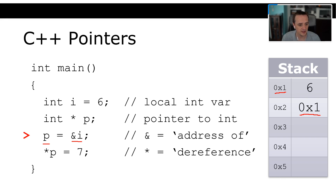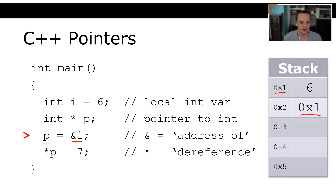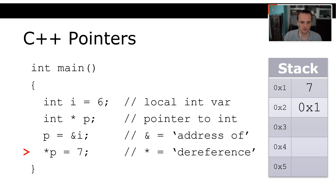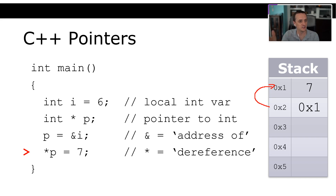To make the pointer point to variable `i`, we use the ampersand symbol — in this context it's the 'address of' operator: `p = &i`. So the value of `p` on the stack is now `0x1`, which is the memory address of `i`. Now if we want to set the value at the memory `p` points to, we can't just say `p = 7` — that would change the pointer address to 7. Instead we dereference: `*p = 7`, which looks up memory at `0x1` and sets it to 7. Now printing `i` will output 7.